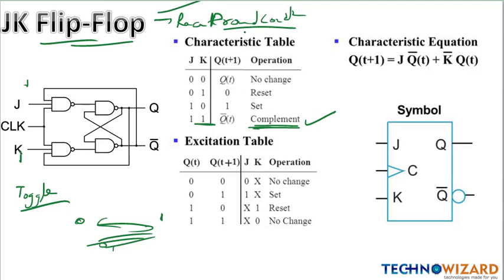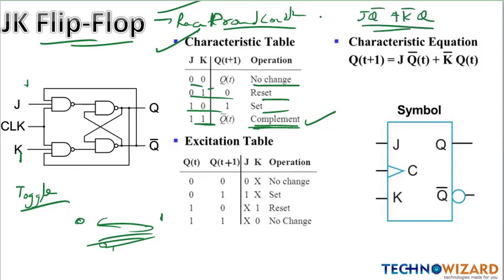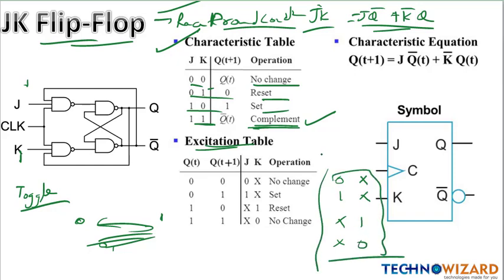The JK flip-flop truth table: J=0, K=0 gives no change; J=0, K=1 is reset; J=1, K=0 is set; J=1, K=1 is toggle. The characteristic equation is Q(next) = J·Q̄ + K̄·Q. These characteristic equations should be remembered as they can come as MCQ questions in exams like ISRO, VSSC, and HSFC. For the excitation table, remember: X, X; X, X; 0, 1; 1, 0 — that is the pattern for J and K.